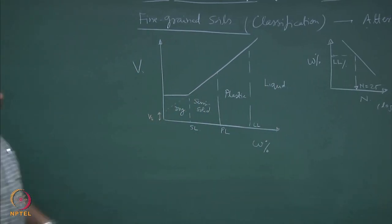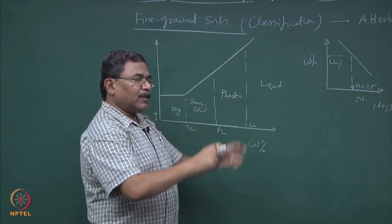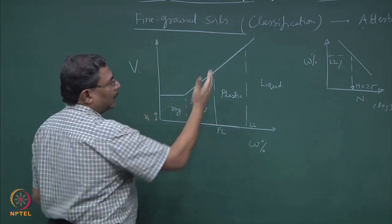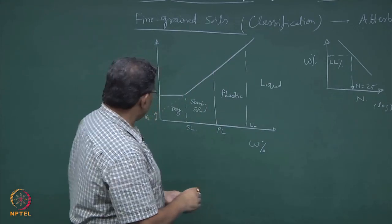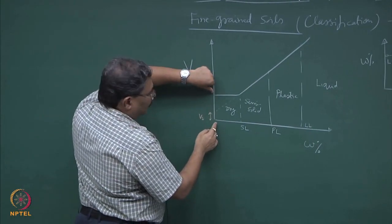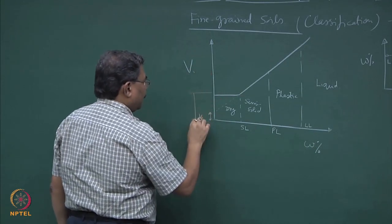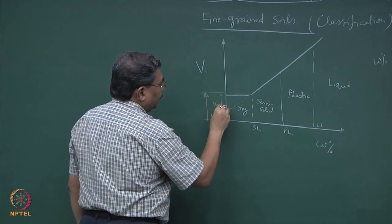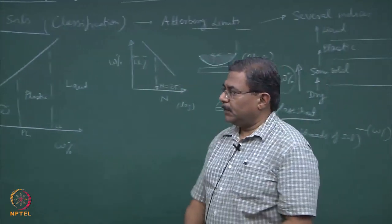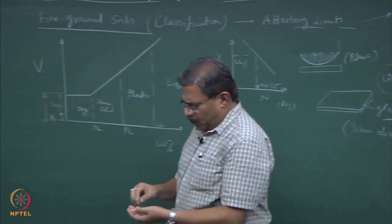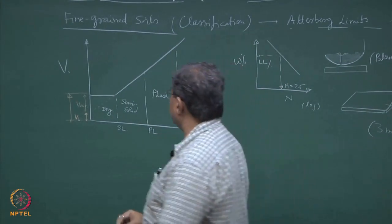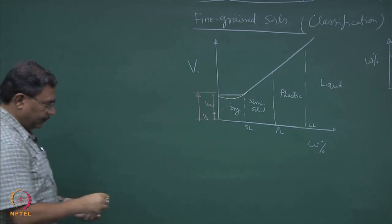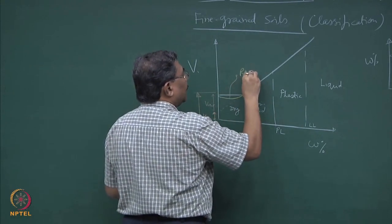To complete this discussion: anything below the shrinkage limit is going to be in the dry state. Translating over here — this is the dry state of the material, this is the semi-solid state, this is the plastic state, and this is the liquid state. Normally these tests are done starting from the right-hand side: you make a slurry and start drying it, decreasing the moisture content and crossing over these boundaries. When you have dried the soil mass, this volume becomes constant, so this much portion of the volume will be volume of air.